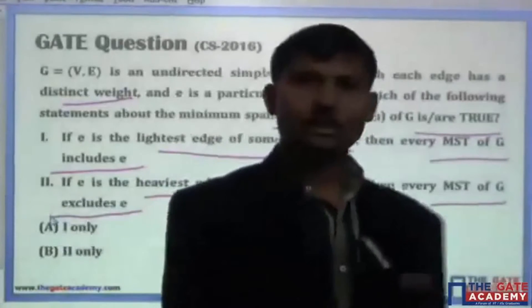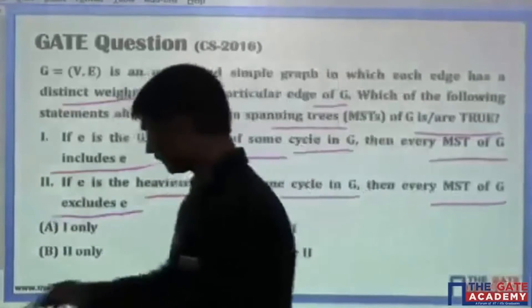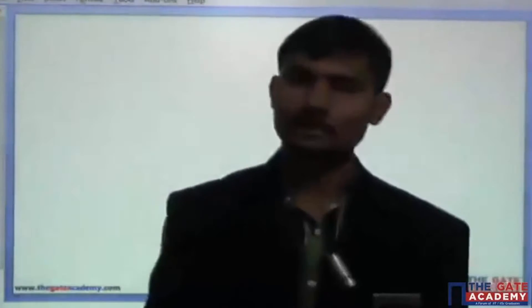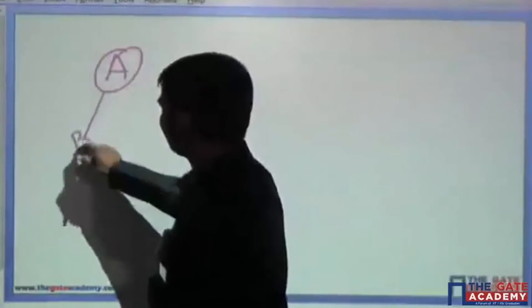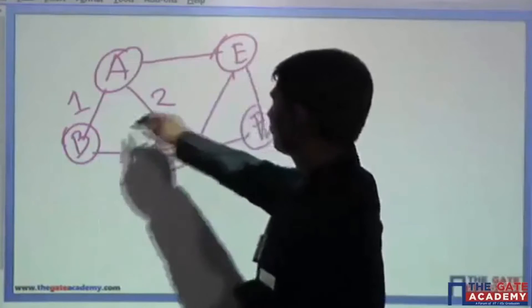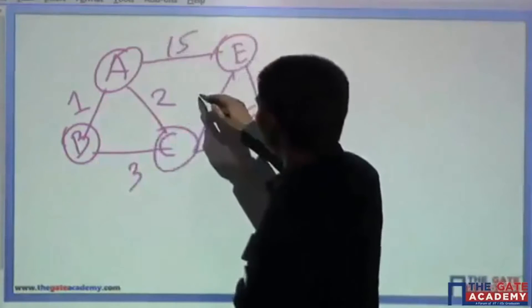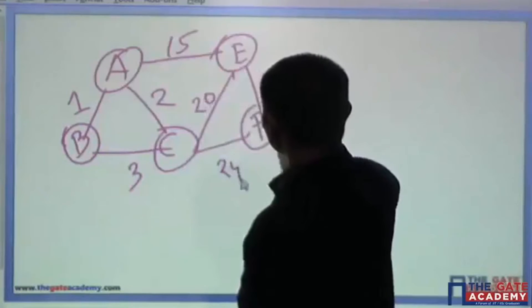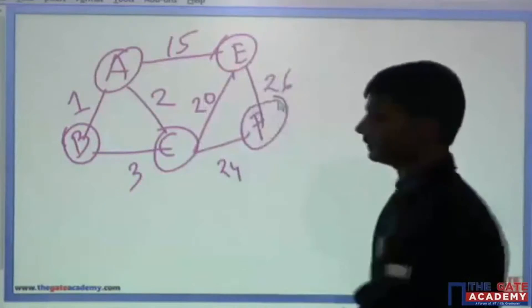Let me take a scenario. The first statement says that if E is the lightest edge in some cycle — not the lightest among all edges, but the lightest in one particular cycle. Suppose we have edges with weights one, two, three, fifteen, twenty, twenty-four, and twenty-six as an example.